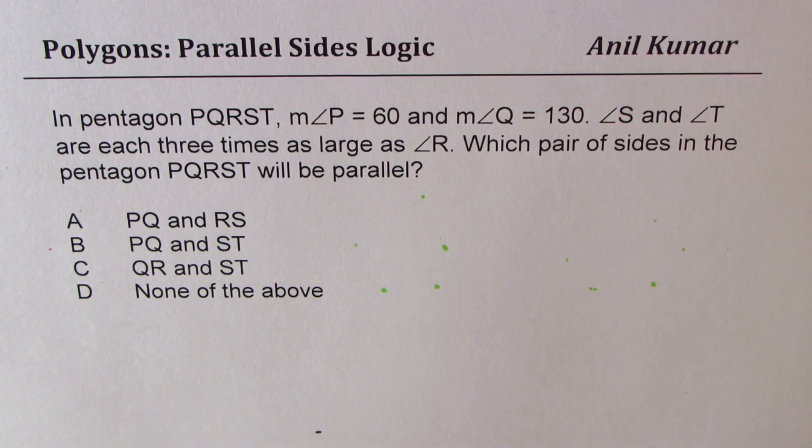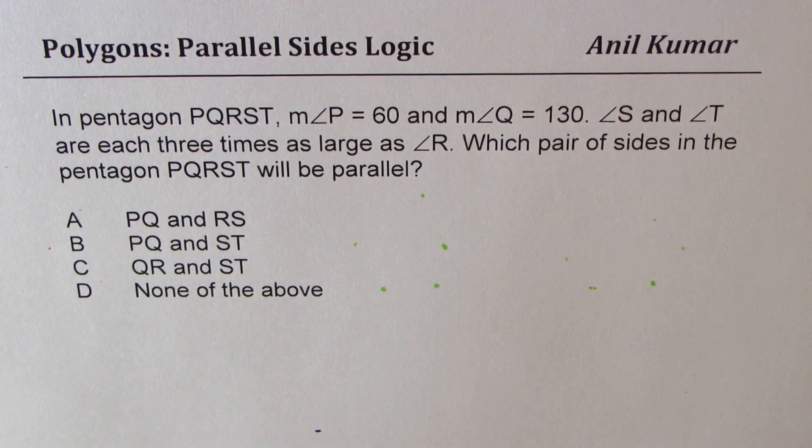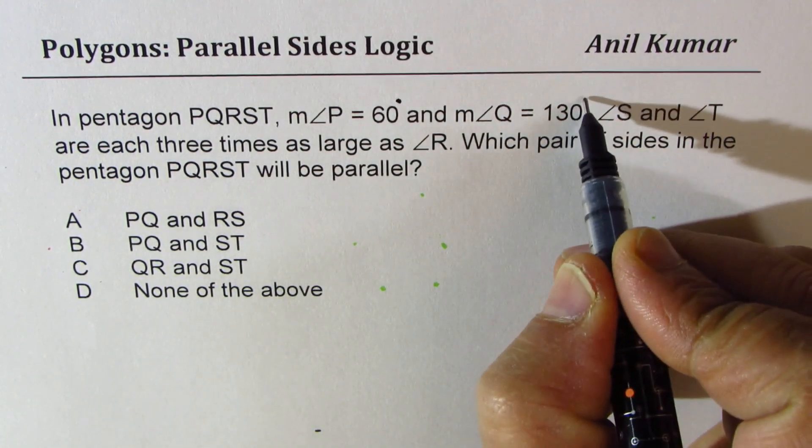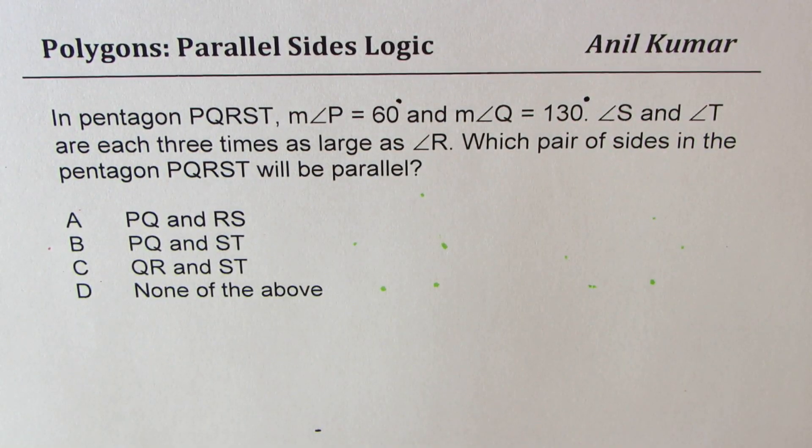Here is the test question on polygons. In pentagon PQRST, measure of angle P equals 60 degrees. Measure of angle Q is 130 degrees. Angle S and T are each three times as large as angle R.